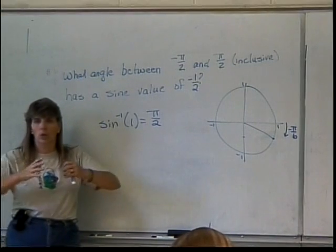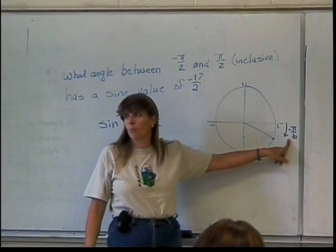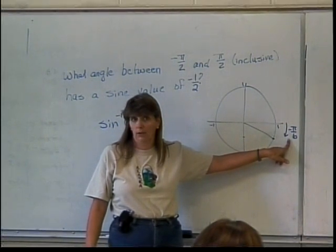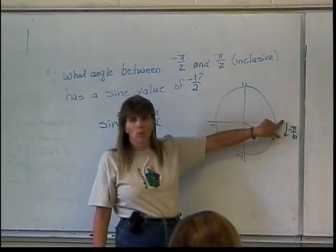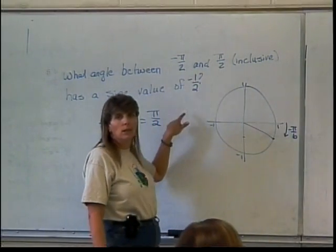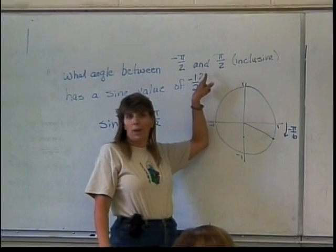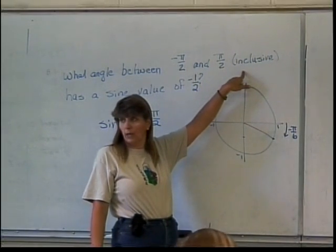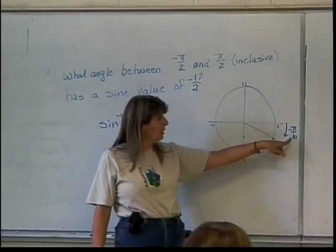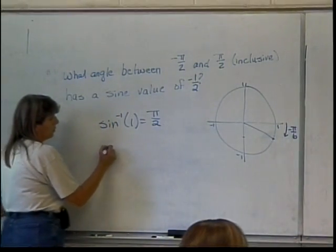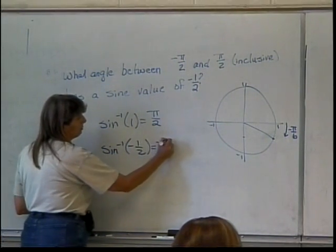Now for those of you who sit there with a unit circle in front of you while you're doing this, this is going to give you 11 pi over 6. But how did it get to 11 pi over 6? Well, it started at 0 and worked its way in the counterclockwise direction to get there. We don't have the option of working past pi over 2 in the counterclockwise direction. So we have to get to the same place going in the clockwise direction, and that's where we get our negative pi over 6. So we have the sine inverse of negative 1 half is negative pi over 6.